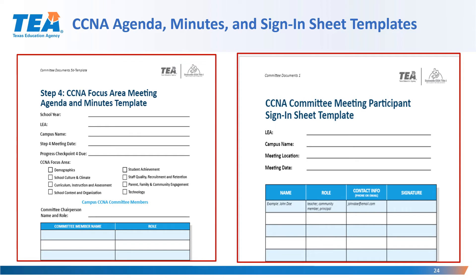Just remember, for Title IV Part A, if a district receives greater than $30,000, they must complete a comprehensive needs assessment. Now I will stop and get some feedback from you regarding some of the CCNA Toolkit templates, tools, and resources. Could you please share in the chat box your thoughts? Is this something that you believe your district could use? Are you already using it as a district? I hope that all participants will take an opportunity and look at the complete CCNA Toolkit, and I will have a direct link to this toolkit later in the slides.